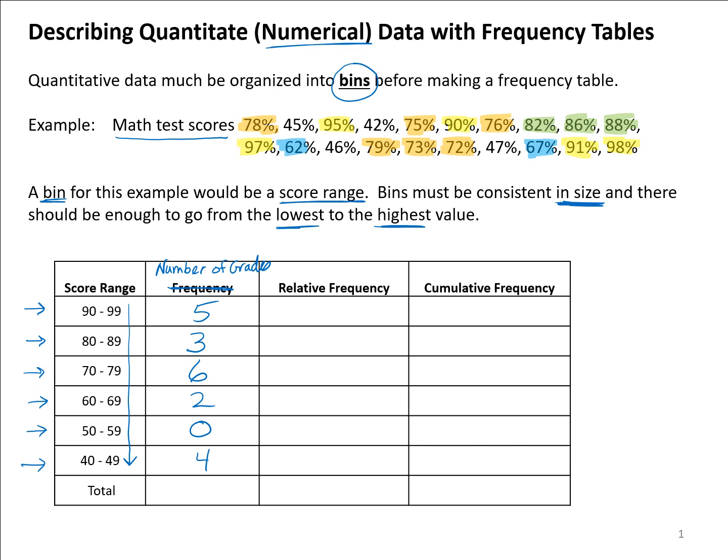One thing to do is to total this up and make sure you have what you thought you should. 5 plus 3 plus 6 plus 2 plus 4 is 20 grades, and if we had counted these up, there were 20 test score grades.